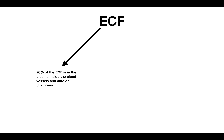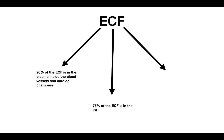Let's look at the extracellular fluid in more detail — it's made up of three parts. First, blood plasma makes up around 20% of the extracellular fluid. Next is interstitial fluid, the fluid outside of cells that surrounds them, which makes up 75% of the ECF. The remaining portion is transcellular fluid.